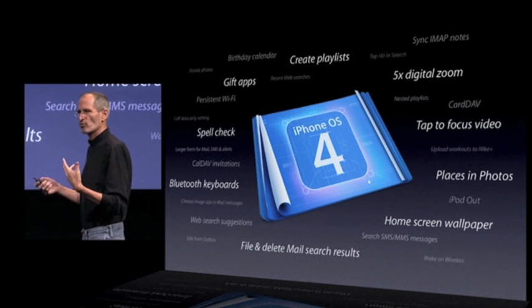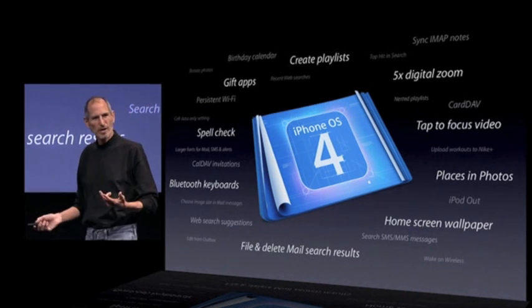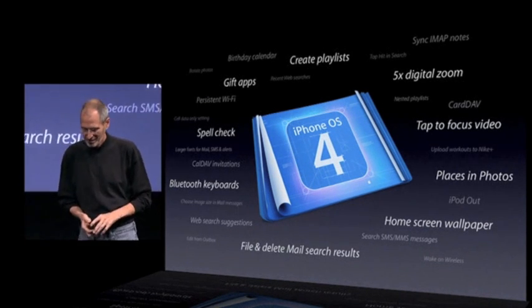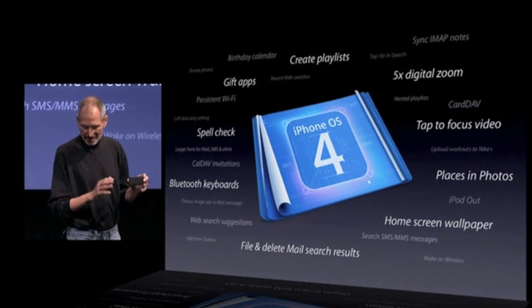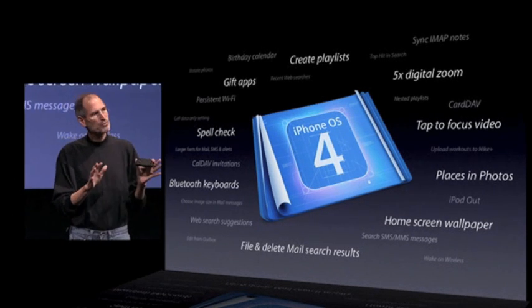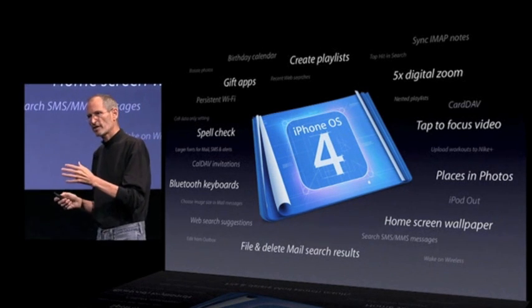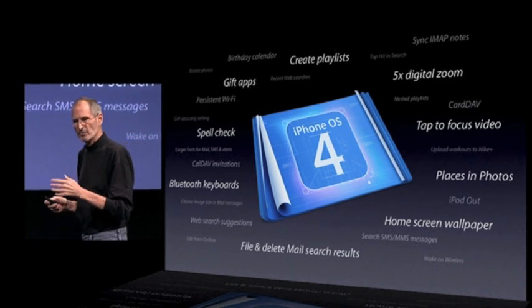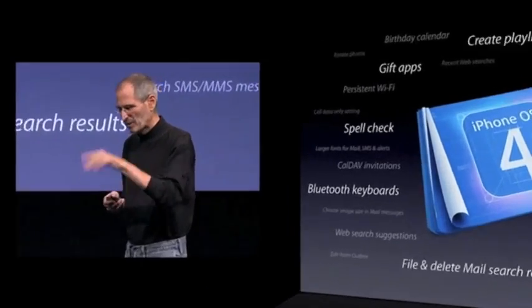You can change the home screen wallpaper — it's been a huge request that we've gotten. You can use Bluetooth keyboards. And we've added a spell checker, which is really nice. If you misspell a word, it'll underline it, just tap it, and it'll give you what it thinks you might have wanted to type.